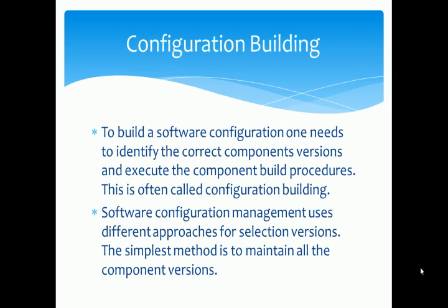The third one is Configuration Building. To build a software configuration, one needs to identify the correct component versions and execute the component build procedures. This is often called Configuration Building. Software configuration management uses different approaches for selecting a version. The simplest method is to maintain all the component versions.